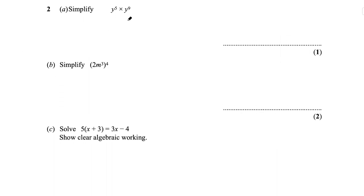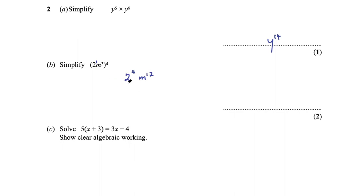Question 2 says simplify y to the power of 5 times y to the power of 9. Using index laws, same base numbers means you add the powers: y to the power of 14. Part B says simplify 2m cubed to the power of 4. Multiply the powers: 2 to the power of 1 times 4 is 2 to the power of 4, and m to the power of 3 times 4 is m to the power of 12. 2 to the power of 4 is 16, so the answer is 16m to the power of 12.